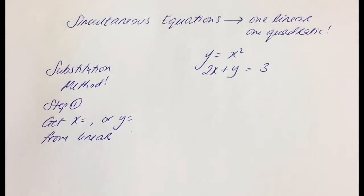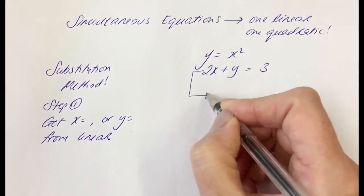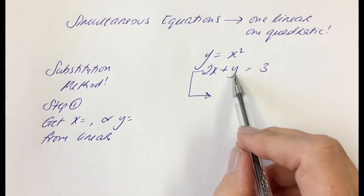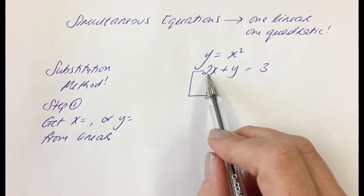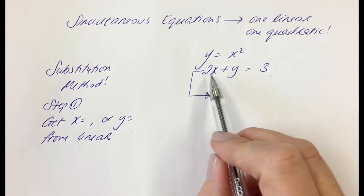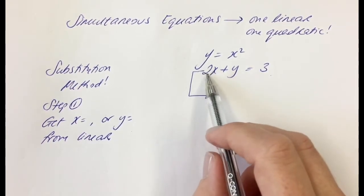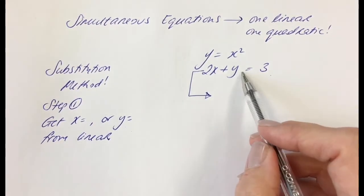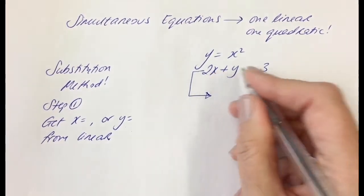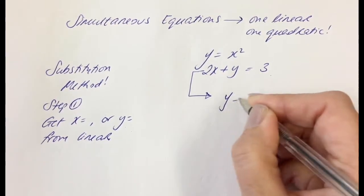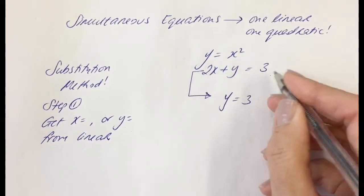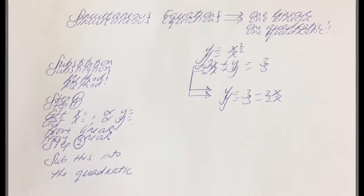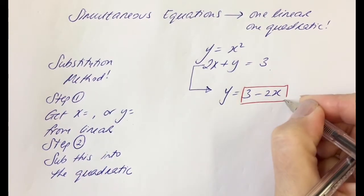So this is my linear equation. It's going to be easier for me to get y equals than to get x on its own, because getting x equals would require dividing across by 2 and it gets quite nasty. So always go with what's easier. In this case, it's easier to get y equals. Rearranging gives us y equals 3 minus 2x.